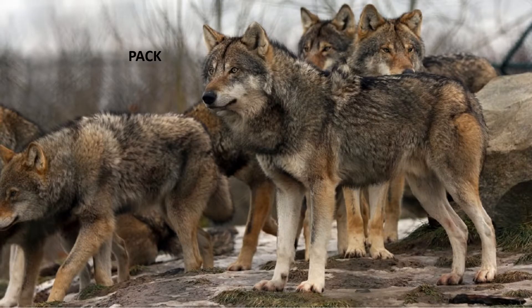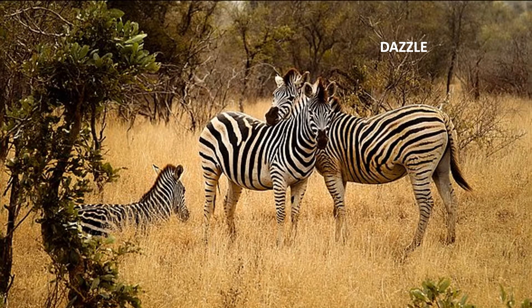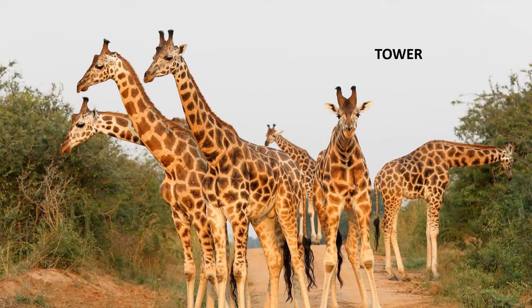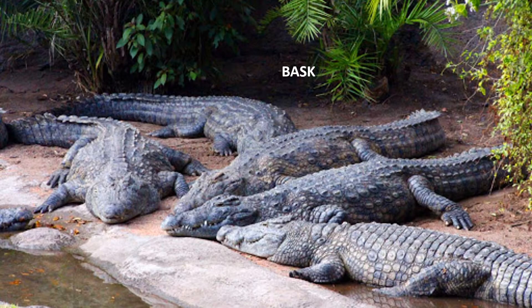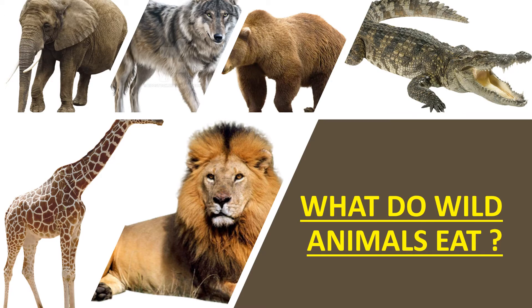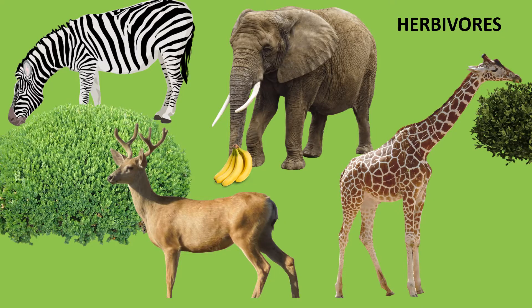A group of zebras is called a dazzle. A group of giraffes is called a tower. A group of crocodiles is called a bask. What do wild animals eat? Some wild animals eat grass, leaves, and plants.